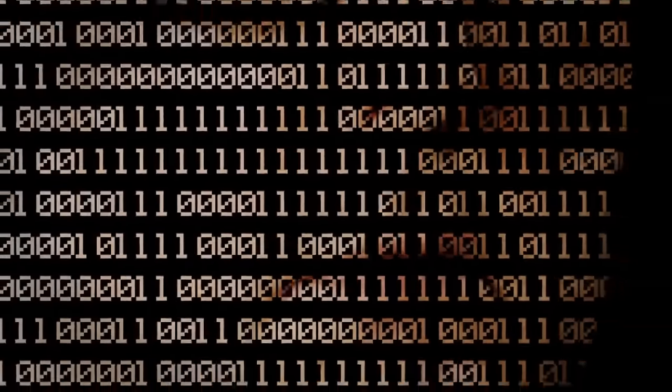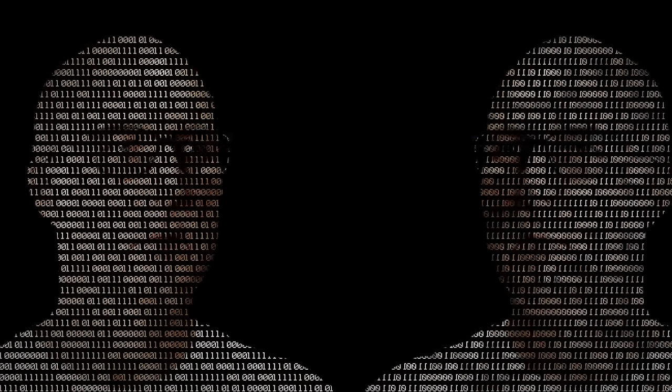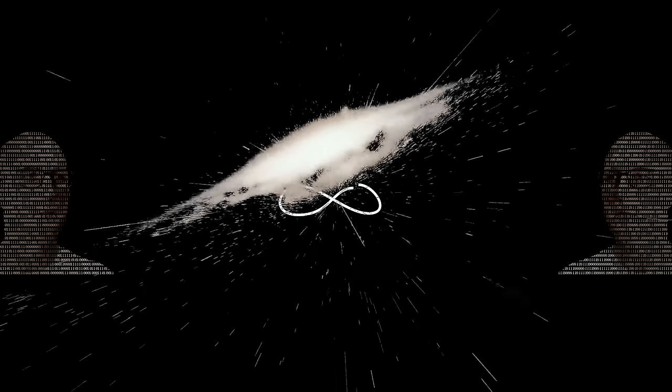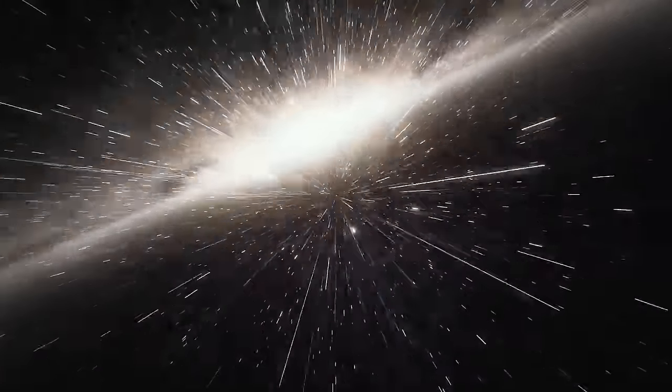When you change the state of one qubit, another qubit knows about it, no matter how far away they are. And it instantly changes as well. They share this secret message even faster than the speed of light.